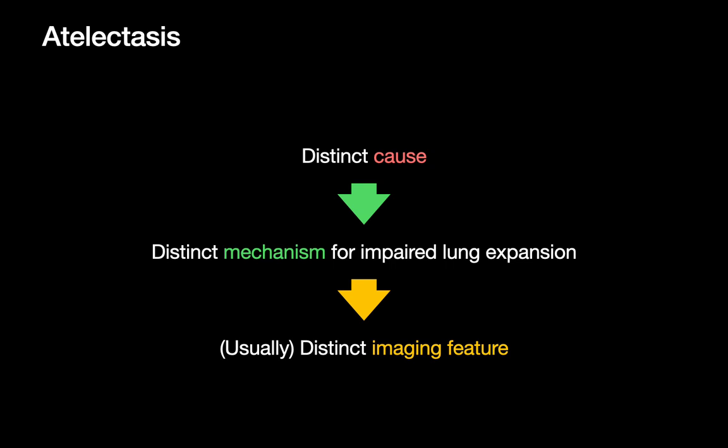In summary, this has been a review of atelectasis organized by pathophysiology. These four different mechanisms — passive, adhesive, obstructive, and cicatricial — have different causes and often unique imaging presentations. Understanding the mechanism helps us recognize the imaging features, determine which cases can be ignored and which need further workup.